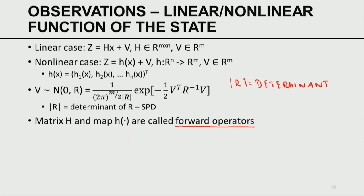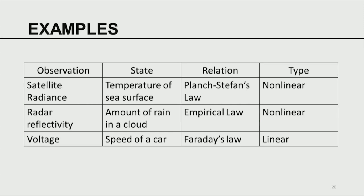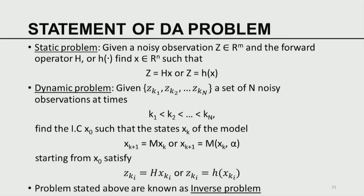To illustrate with examples: the state could be sea surface temperature, and the observations are satellite radiance in the infrared domain. The relation between radiance and temperature is called Planck's law, and that relation is non-linear. For radar reflectivity, the actual state is the amount of rain, and the law is empirical and non-linear. Another example: the observation could be voltage, the state of a car could be its speed, and the physical relation is called Faraday's law — that is a linear relation. So we could have non-linear models or linear models, and we have the state of the system as well as the nature of the observables.